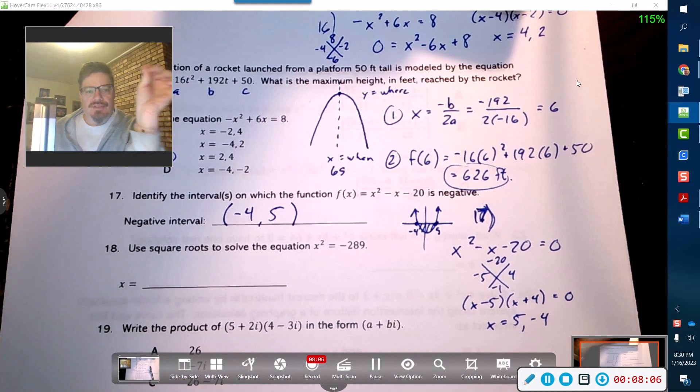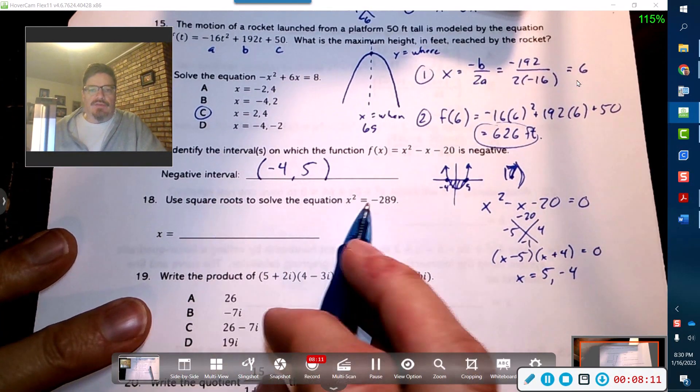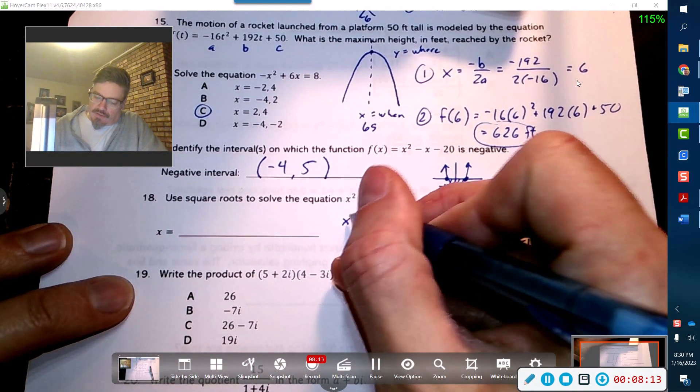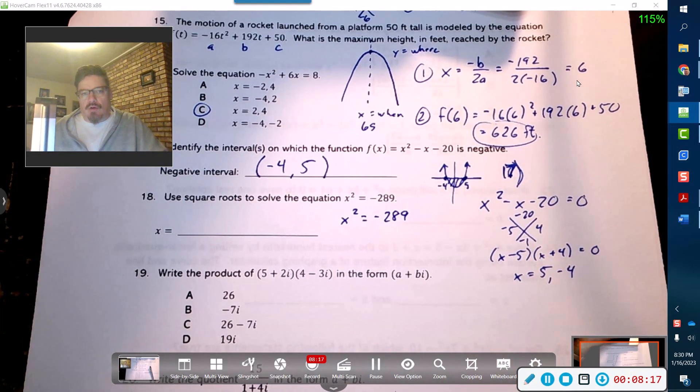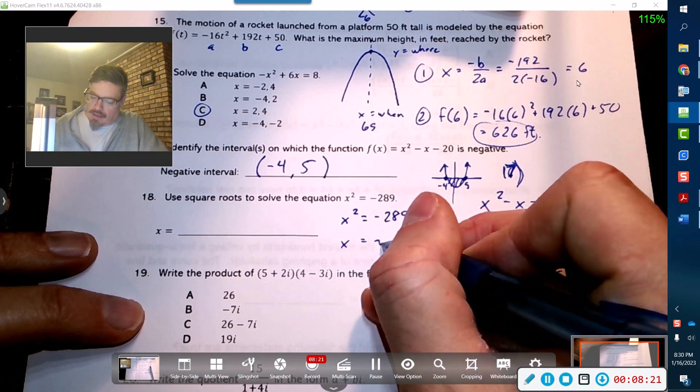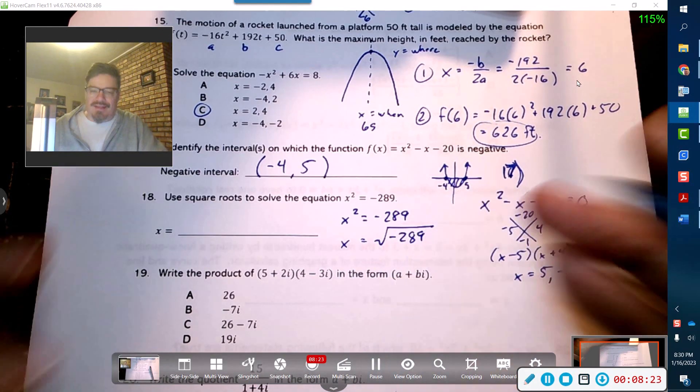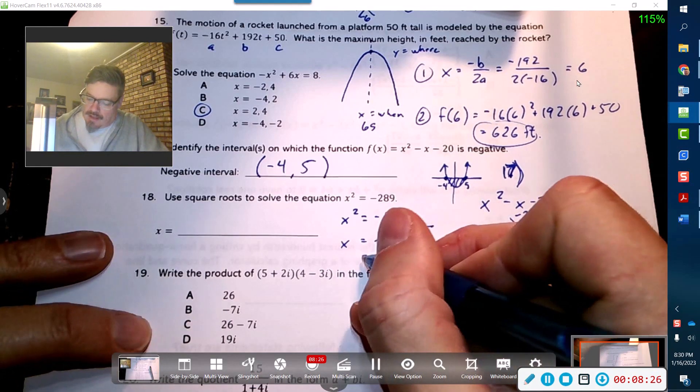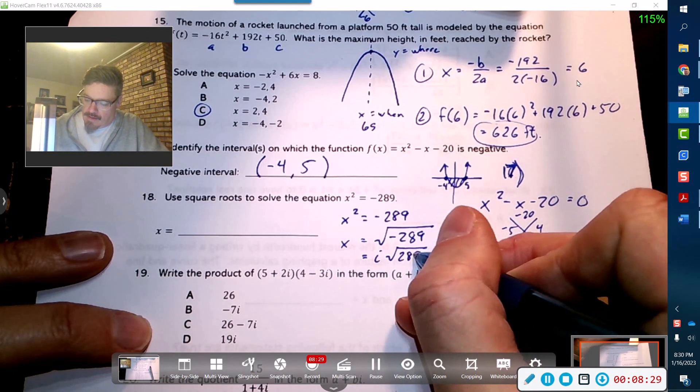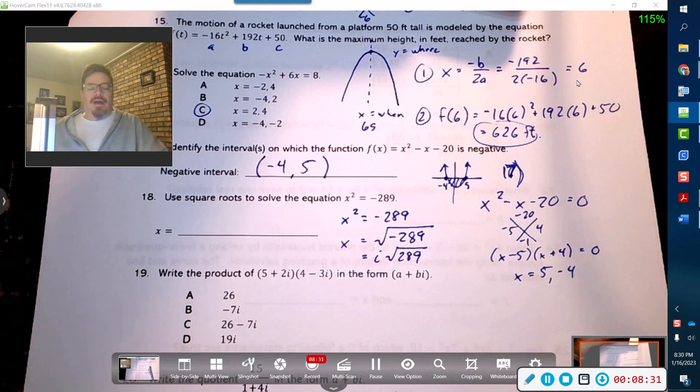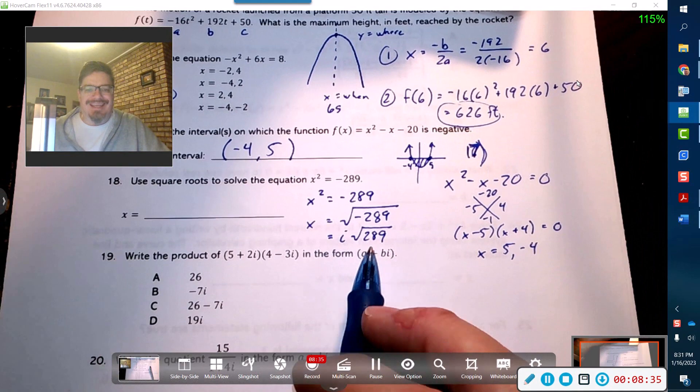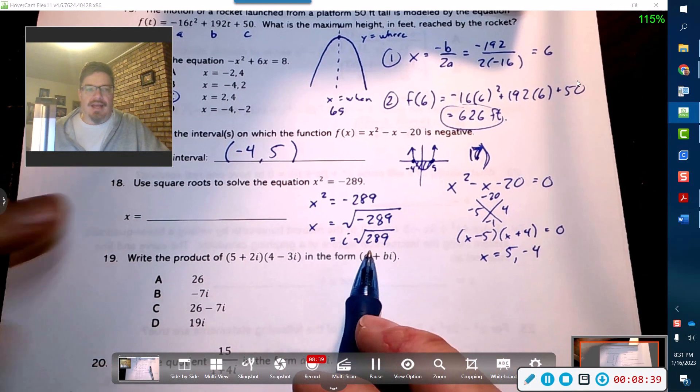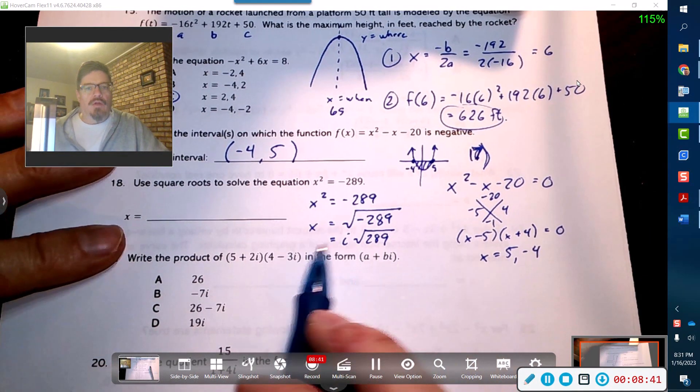We have eight minutes, let's keep going. Number 18, you want to use square roots to solve this. Cool, so I'm going to take the square root of both sides. Now all this is going to do, first of all, it's going to take out an i.